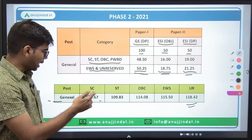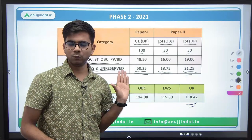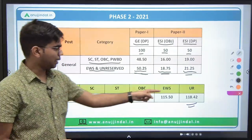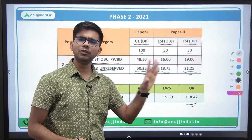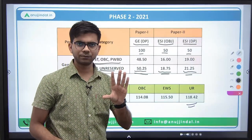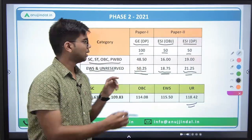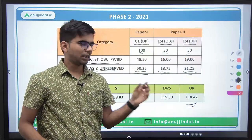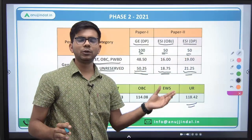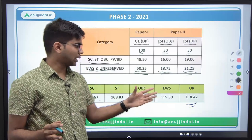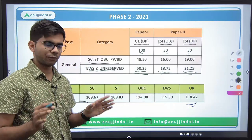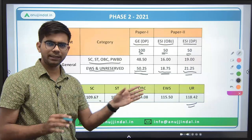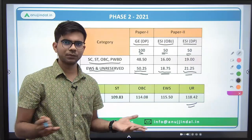For overall cutoff of Phase 2 in the general stream, the unreserved category cutoff was around 120 marks out of 200 (100 + 50 + 60 marks structure). So 60% marks was the required overall cutoff for Phase 2 in 2021. Other categories had slightly lower cutoffs, which is obvious.